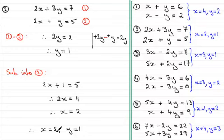So if x is 2, 2 times 2 is 4, y is 1 so 3 times 1 is 3, 4 add 3 does make 7. And if we check it out in the second equation, 2 times 2 for x makes 4 plus 1 gives us 5. So both equations are satisfied.